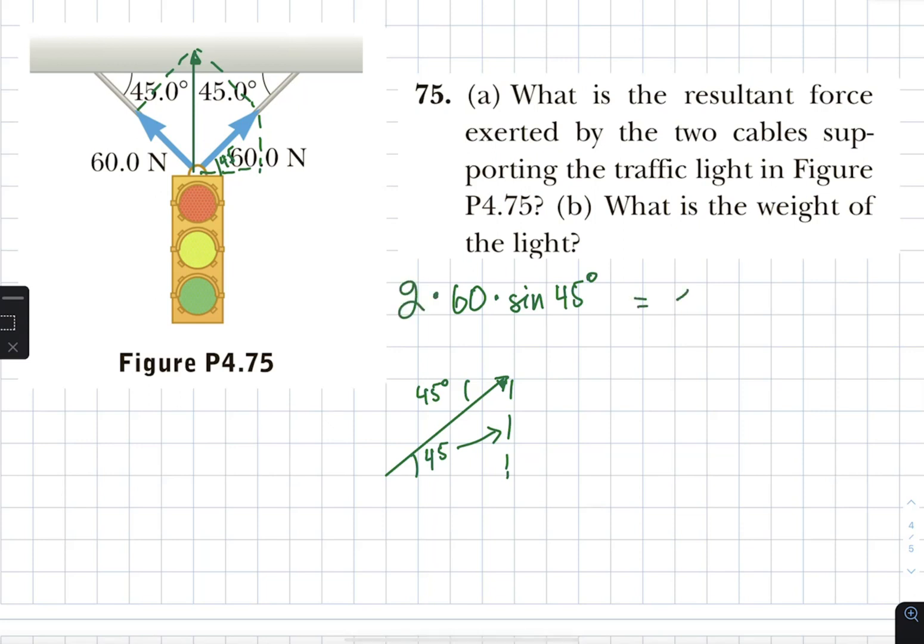So you end up with 120 sine of 45 degrees. So it's 60 root 2, which is 60 root 2, times root 2, that's 85 newtons. So that's the net force.